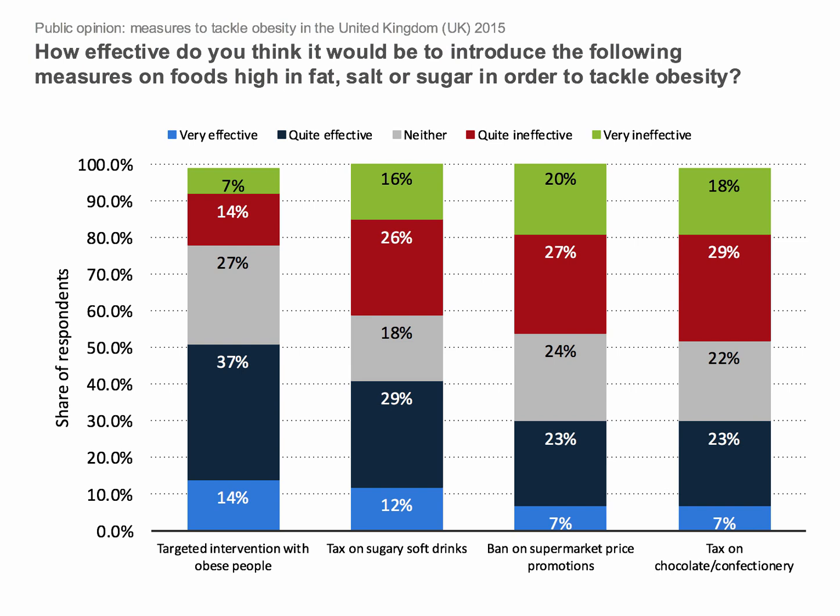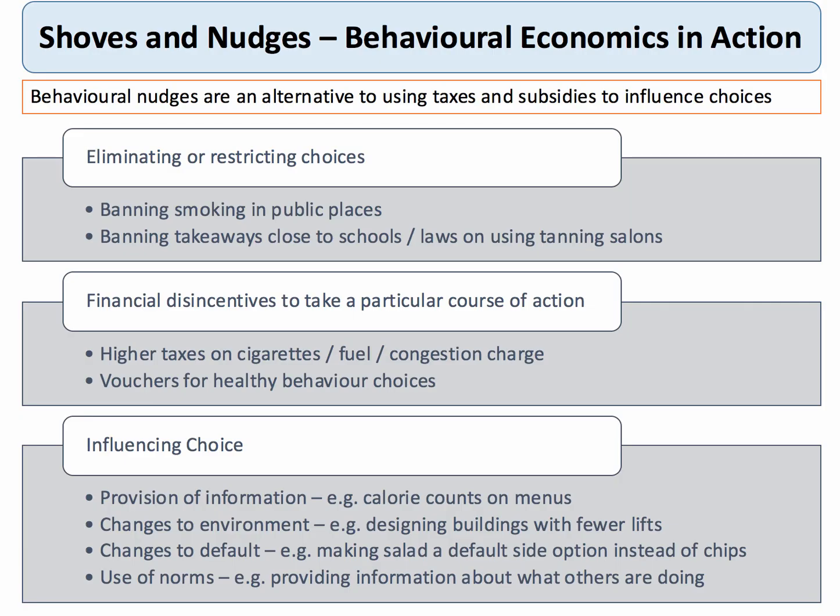Less than one in six people think a sugar tax will be very effective, and in some cases less than 10% believe taxes on chocolate will be effective. Only about 30% think supermarket price promotion bans and taxes on chocolate will be effective or very effective. Many consumers doubt whether these interventions work — we'll find out when the sugar tax comes in, much as we've already seen the plastic bag tax introduced.